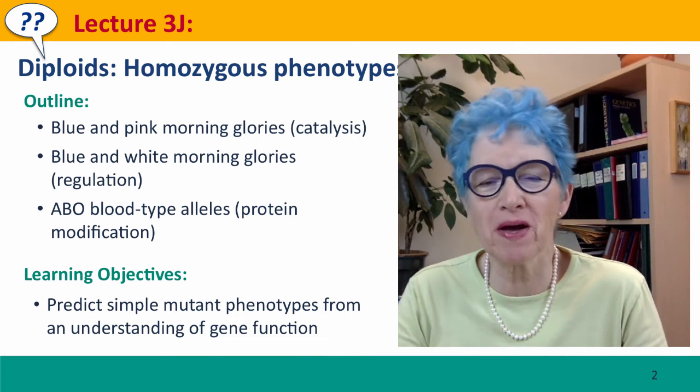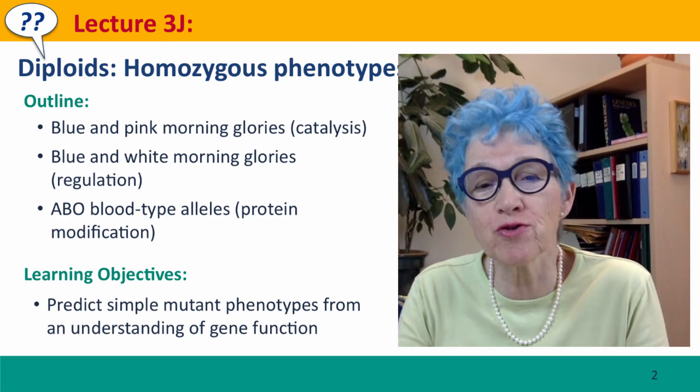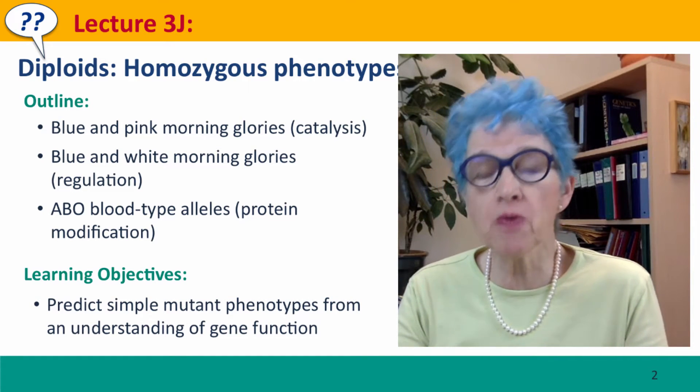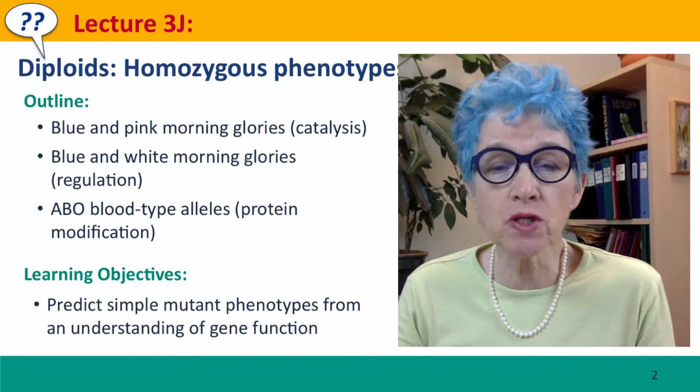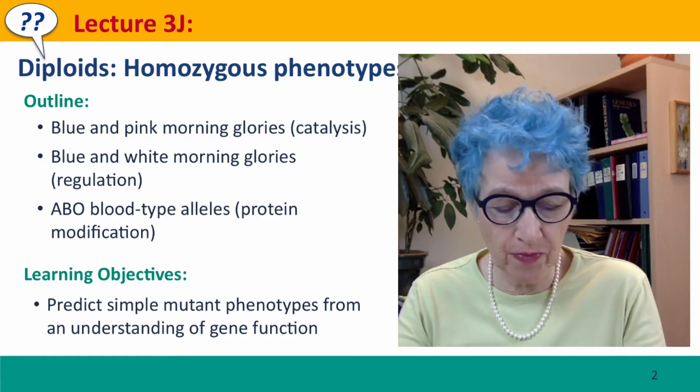Hi, everyone. Welcome back to Useful Genetics. This is lecture 3j, where we're going to talk about diploids with homozygous phenotypes.